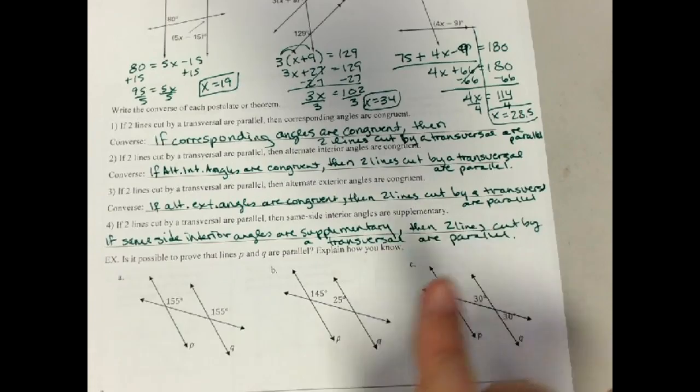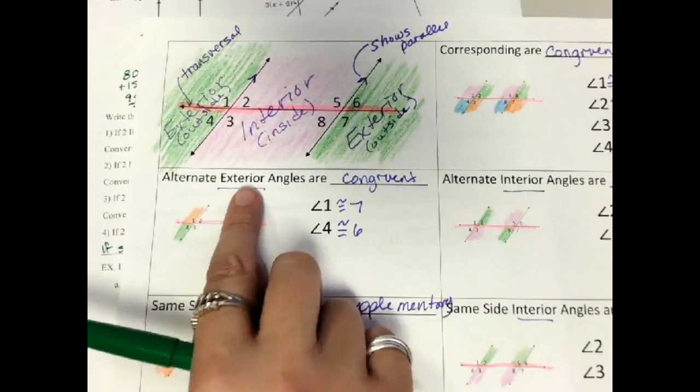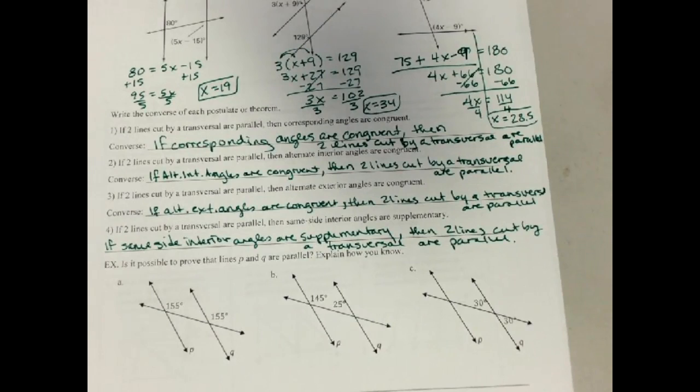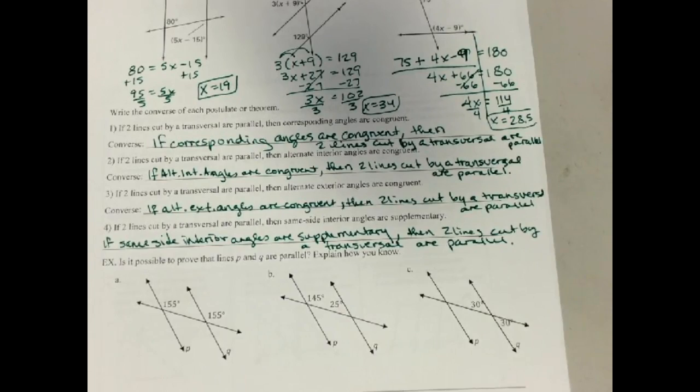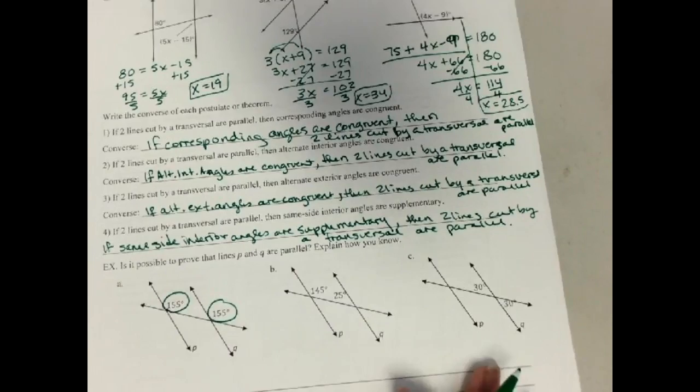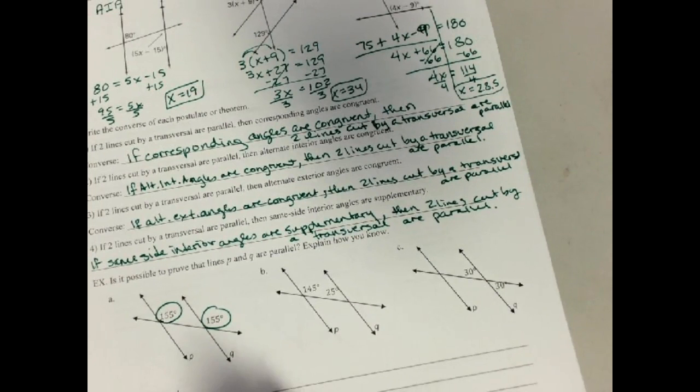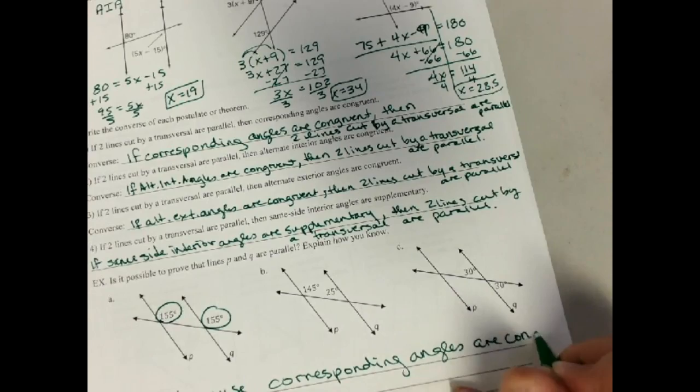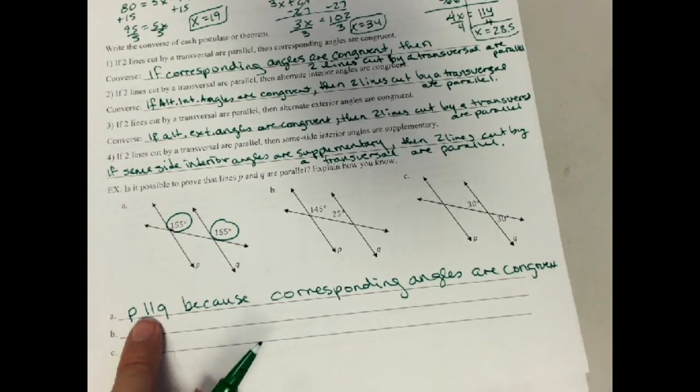So what we're saying is, what we did last time, where we said if they're alternate interior, then they're congruent, I'm now saying if they're congruent, I know those lines were parallel to begin with. So let's go through this one, and it says, is it possible to show that P and Q are parallel? Well here, what kind of angles are these? Those are corresponding angles from last time, and it said corresponding angles are congruent. Are those congruent? They are, so P is parallel to Q because corresponding angles are congruent.